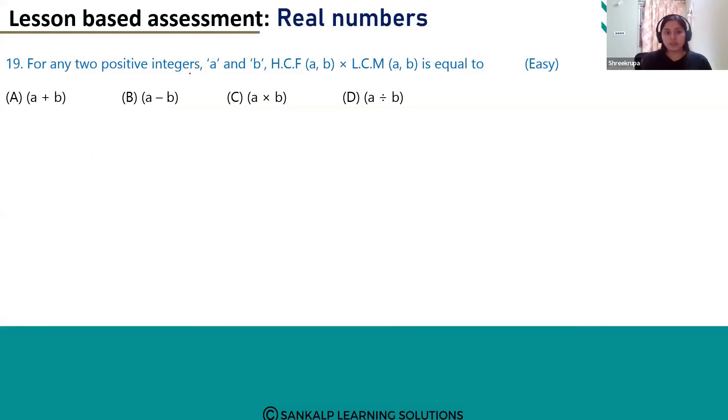For any two positive integers A and B, HCF of AB multiplied by LCM of AB is equal to.